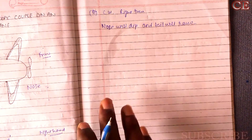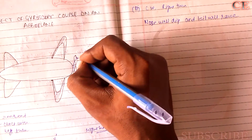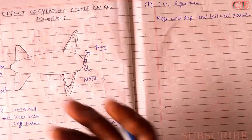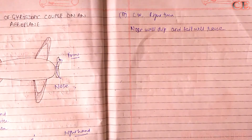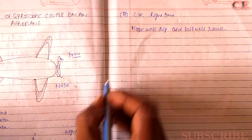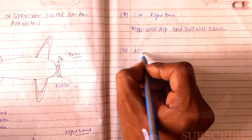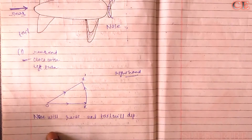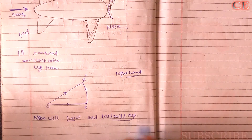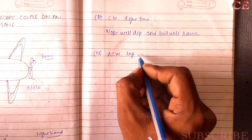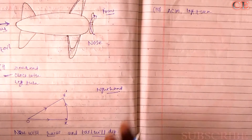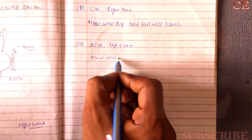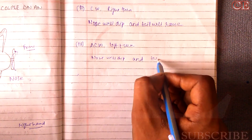And if you take the anticlockwise direction — when viewed from the rear end it will be anticlockwise. So this is Case 3: it is rotating anticlockwise and taking a left turn. What will happen — it will be exactly opposite to the clockwise case. In the clockwise case the nose was raising and tail was dipping, so in the anticlockwise and taking left turn case, the nose will dip and tail will raise.